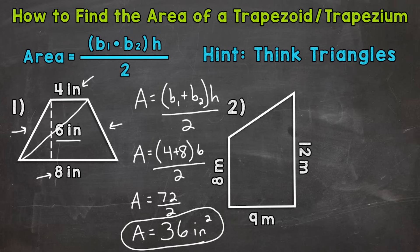Let's move on to number two, and we'll start by writing out our formula. So area equals base one plus base two times the height divided by two. So let's plug in. So base one, we need to find the two parallel sides. And the two parallel sides are the eight meters and the 12 meters.